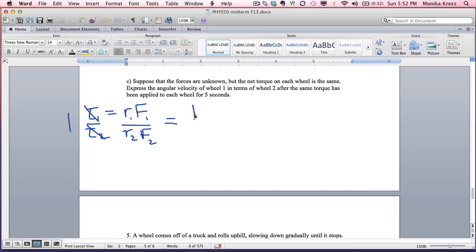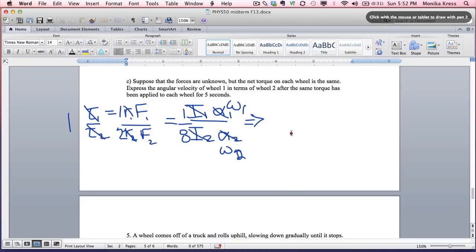The torques are equal to I alpha, so we've got I1 alpha1, I2 alpha2. We know that R1 divided by R2 is 1 over 2, and the forces are unknown. I1 over I2 is 1 over 8, and alpha1 over alpha2, that's going to be our omega1 divided by omega2. When you do all this out, you get omega1 over omega2 equals 8.